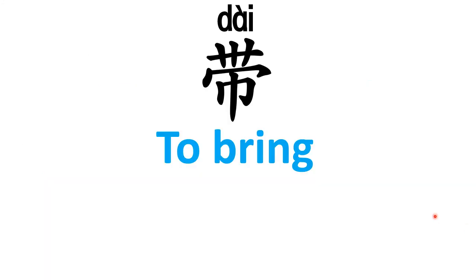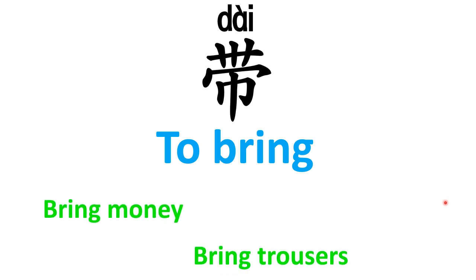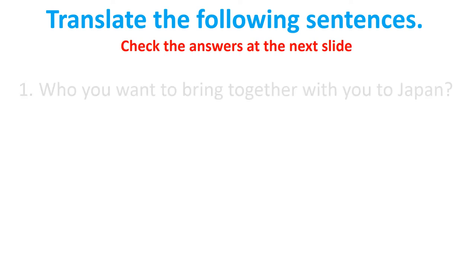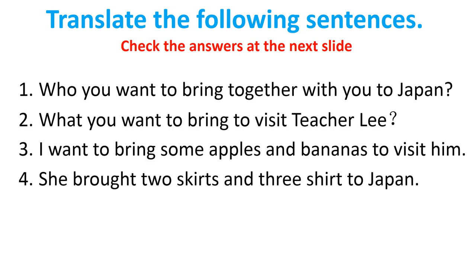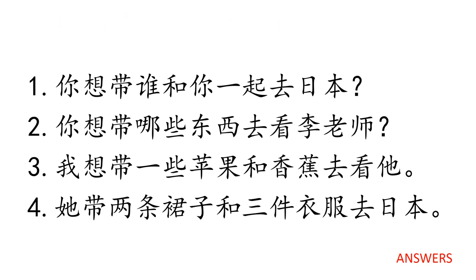带 means 'to bring' or 'bring along with you'. Example: 带钱 means 'bring money', 带裤子 means 'bring trousers', 带书 means 'bring books'. Do you bring books today? 今天你有带书吗? Try to translate the following sentences — and these are the answers.